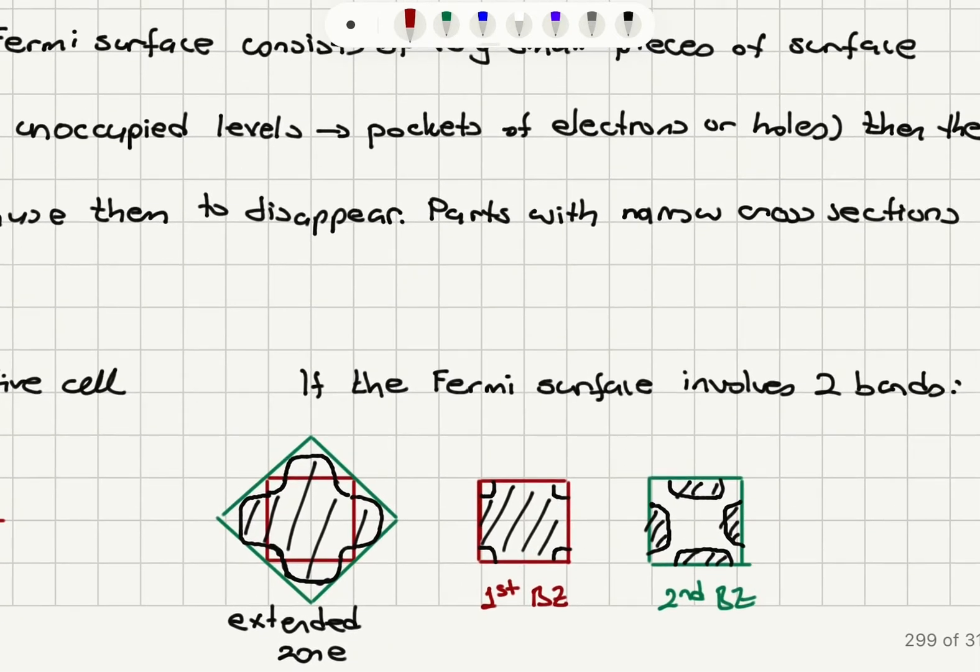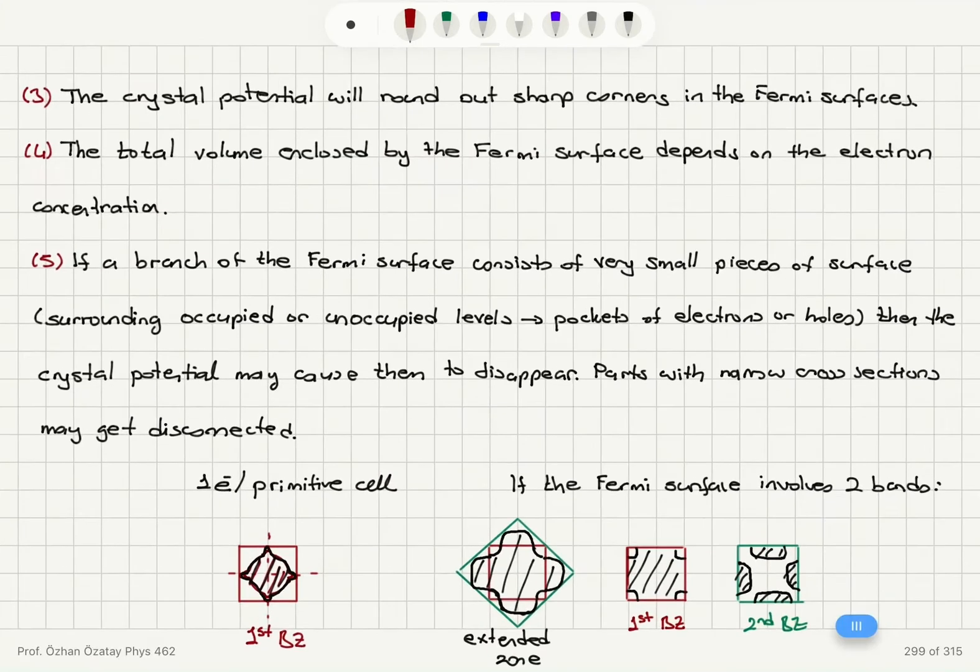If this Fermi surface involves two bands, then you can see that we will have the crossing between the two Brillouin zone boundaries with perpendicular crossing here and rounded corners. So it's not going to be a sharp corner as we discussed. So you can see in this scheme that the first Brillouin zone is almost fully occupied except these corners and the second Brillouin zone part is folded back to the first Brillouin zone as you can see here.